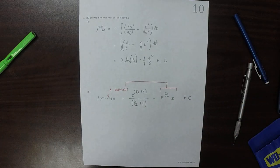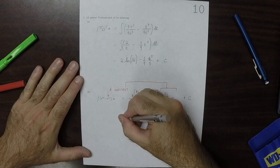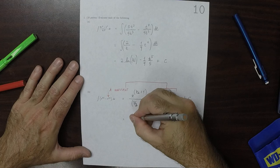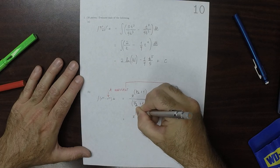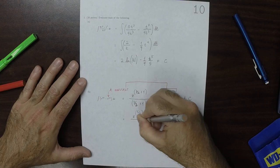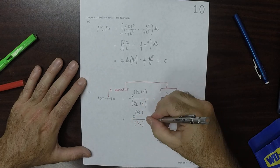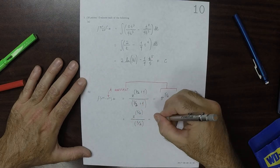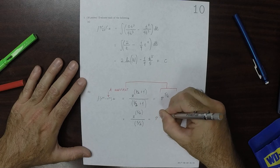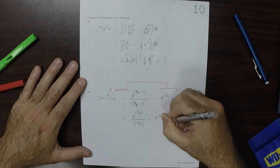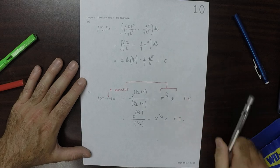Then I'll simplify this just a little bit. That'll be x to 5 halves over 5 halves, and then minus pi to 5 halves x, plus a constant.